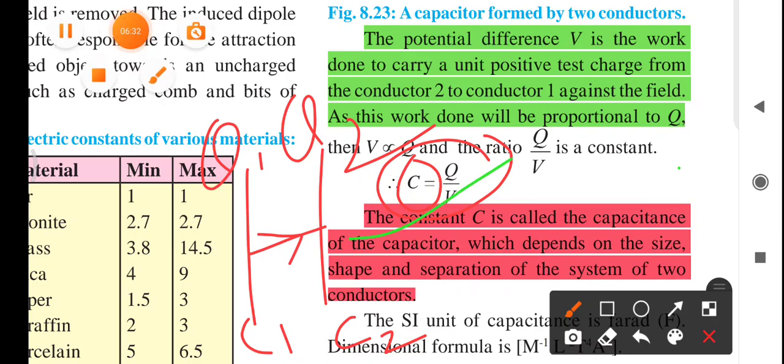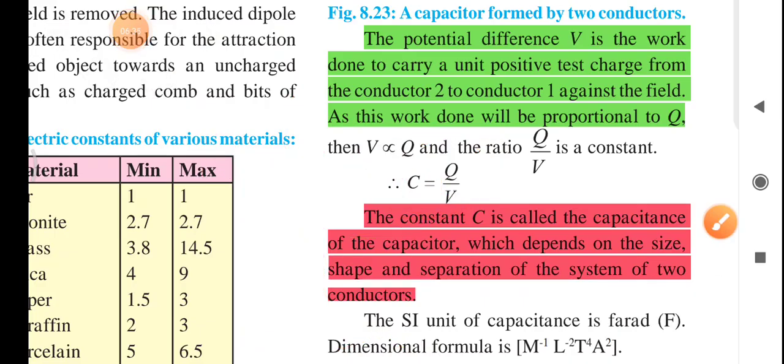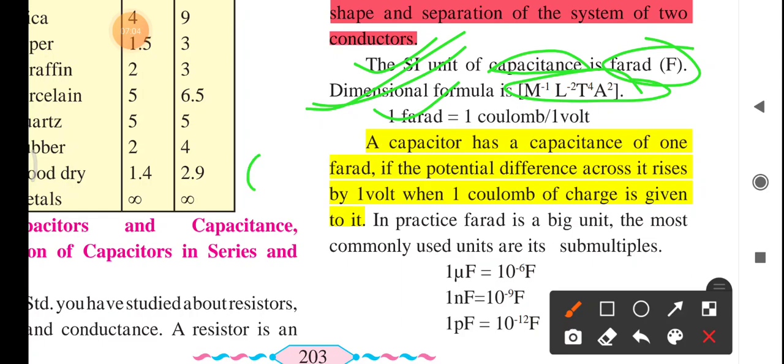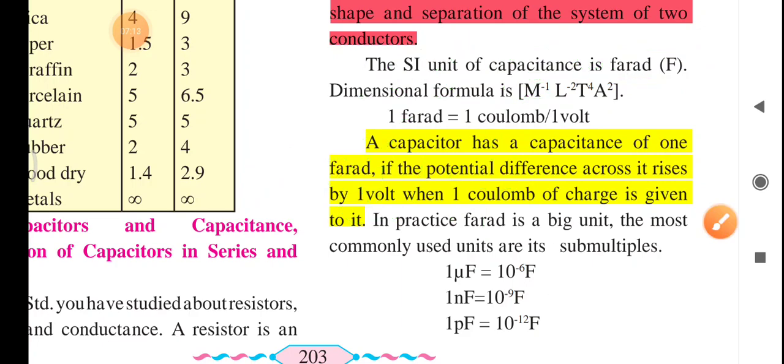The SI unit of capacitance is farad. Farad is the SI unit of capacitance. The dimensional formula is M1 L minus 2 T to the power 4 A to the power 2. This is the dimensional formula for capacitance. 1 farad is equal to 1 coulomb per 1 volt, because C is equal to Q by V. C is measured in farad.